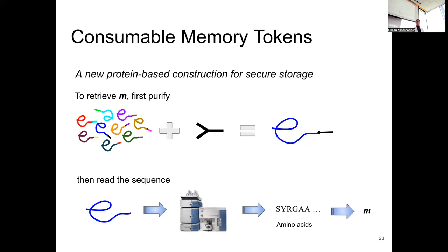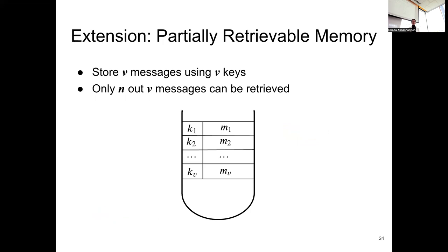You have to have the header attached to the protein — otherwise you cannot pull it down from the impure sample and your message is lost. If you lose the description of the header, meaning you cannot figure out the matching antibodies, your message is lost. This is a simplified version of the protocol — the actual protocol deals with phages and bacteria, and we cannot even use all amino acids because some are not stable when dealing with short messages.